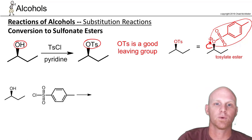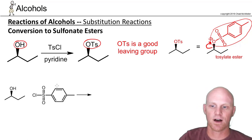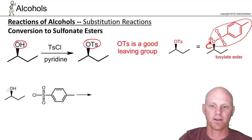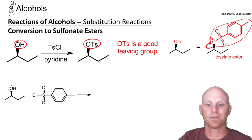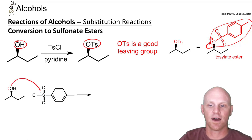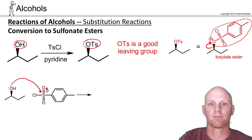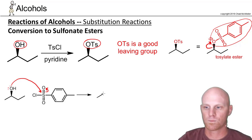The way this reaction actually works: we have TsCl, tosyl chloride, drawn below, and we mix this with pyridine as well, just like we did with PBr3 and SOCl2. The first step is the alcohol performing a nucleophilic attack on the sulfur.